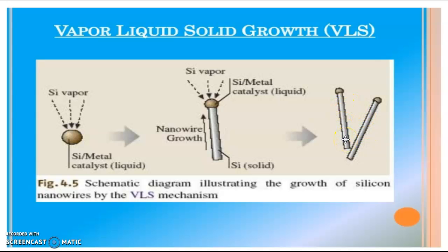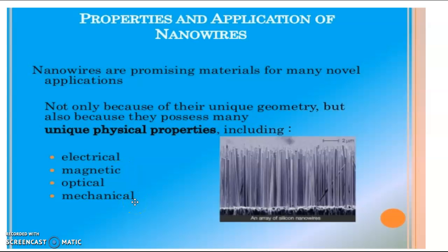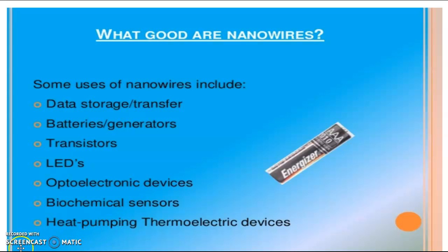When we discuss the properties and applications of nanowires, nanowires are promising materials for many novel applications — not only because of their unique geometry, but also because of the many unique physical properties they possess. For example, electrical property, magnetic property, optical property, and mechanical strength. Some uses of nanowires include data storage and data transfer. They can also be used in batteries, generators, transistors, LEDs, optoelectronic devices, biochemical sensors, and heat-pumping thermoelectric devices.